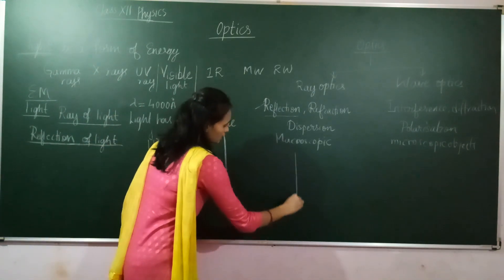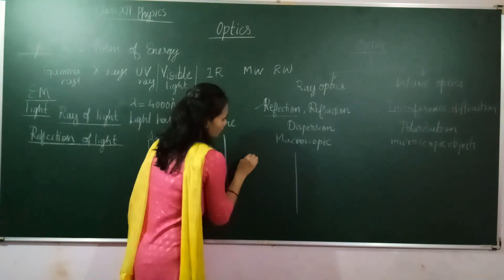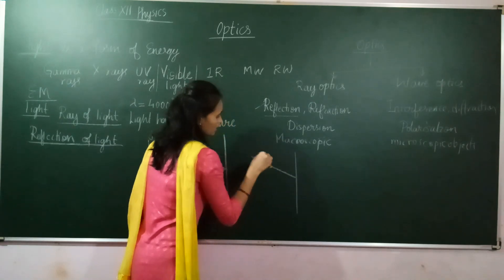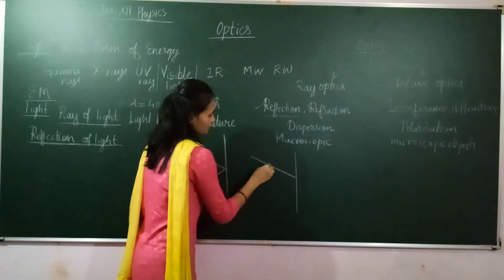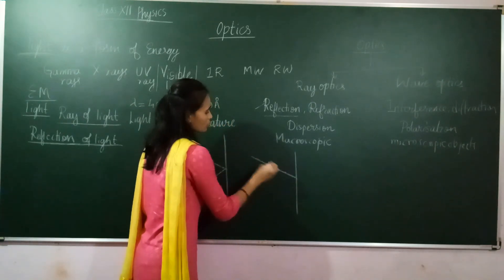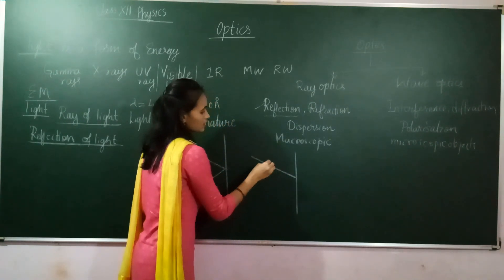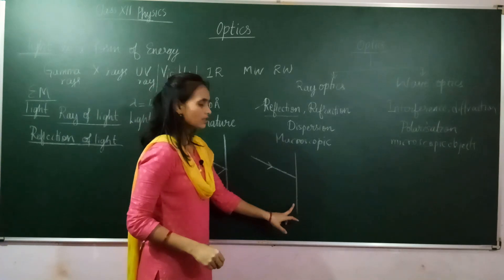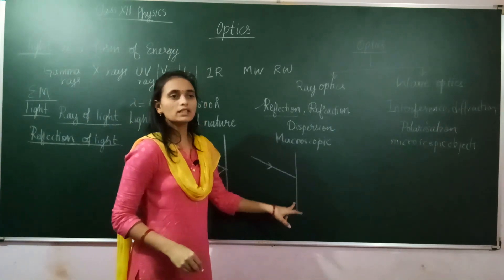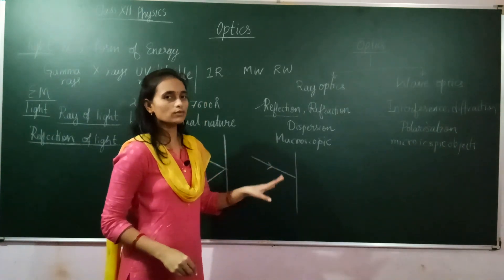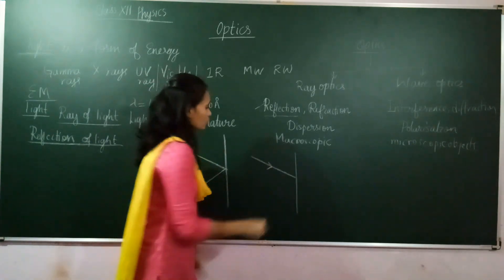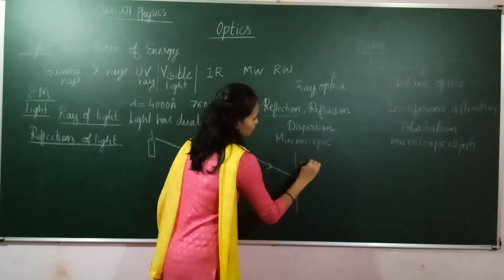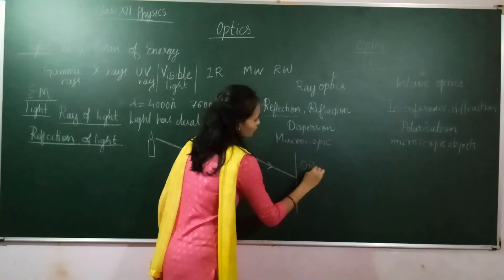When the light ray strikes the surface, three things can happen. The first is reflection — the surface reflects the light back. The other outcomes will be discussed next.